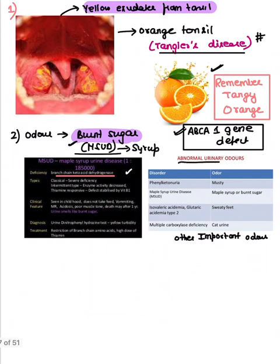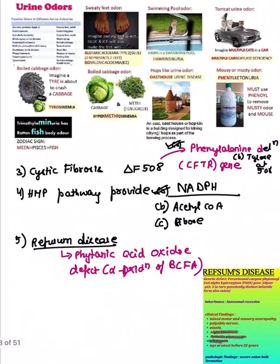Let's review some abnormal urine odors. Phenylketonuria gives a musty odor. Maple syrup urine disease gives a maple syrup or burnt sugar odor. Isovaleric acidemia gives a sweaty feet odor. Multiple carboxylase deficiency gives a cat urine odor.